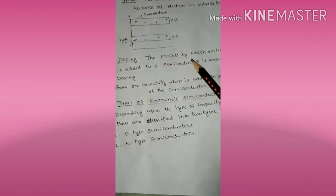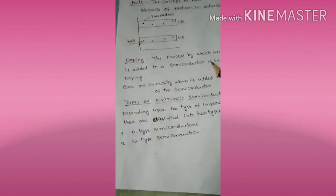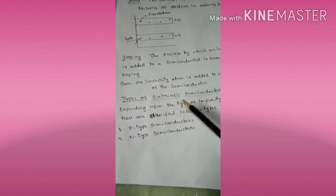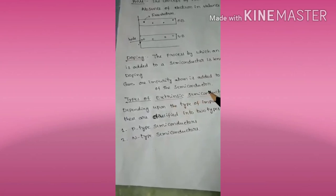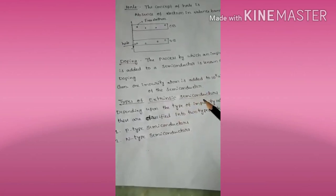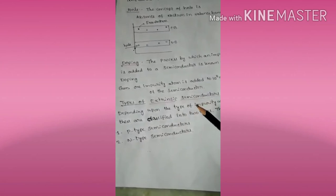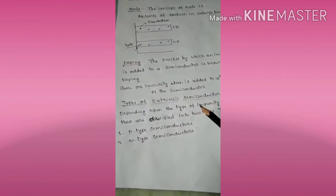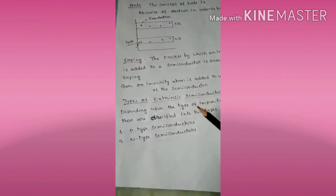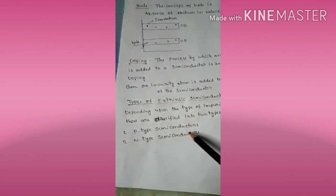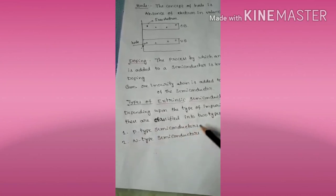Now, discussing the types of extrinsic semiconductors — depending on the type of impurity added to the intrinsic semiconductor, they are divided into two types: P-type semiconductors and N-type semiconductors.